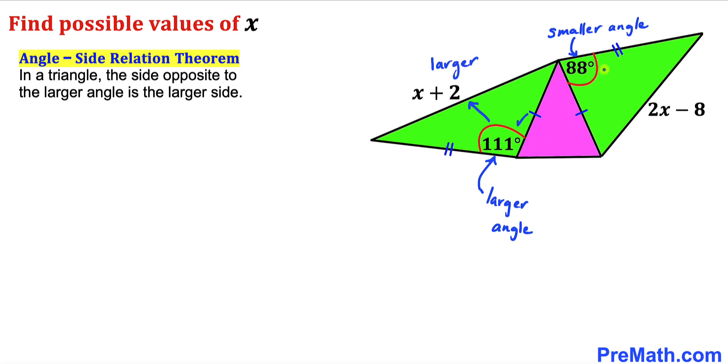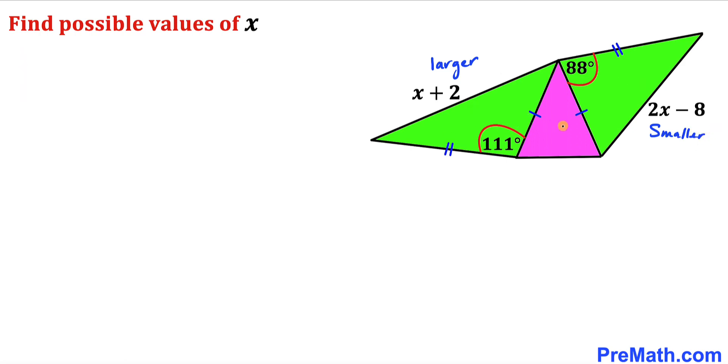And likewise, this 88 degrees is our smaller angle. So the side opposite to that angle is going to be the smaller side. And now since this side is smaller than this side, we can write them in an inequality symbol.